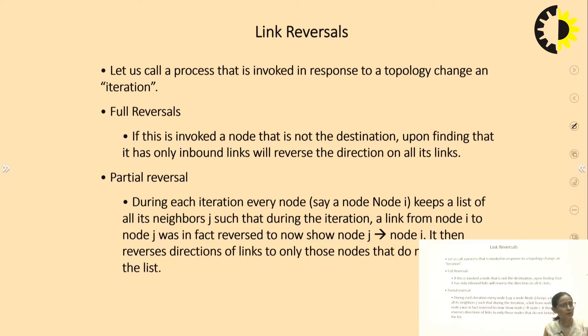What is link reversal? Let us call a process that is invoked in response to a topology change an iteration. In the case of full reversal, if a node that is not the destination upon finding that it has only inbound links will reverse the direction on all its links. In partial reversal, during each iteration every node i keeps a list of all its neighbors j. Then it reverses the direction of the links to only those nodes that do not belong to the list.